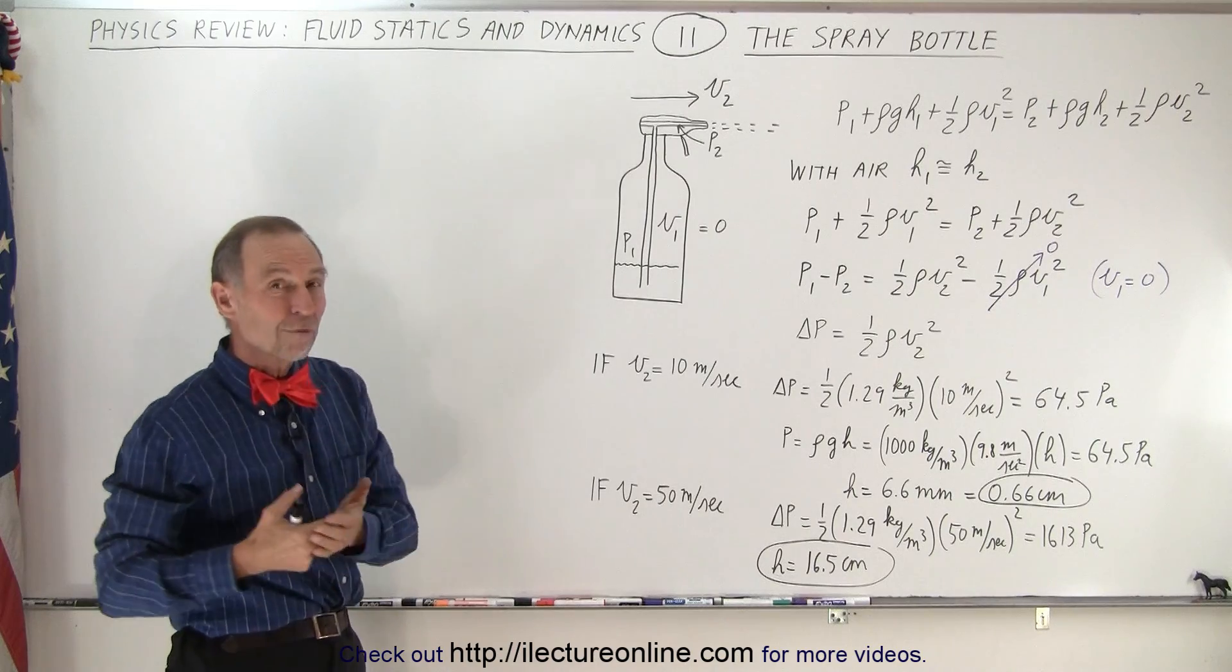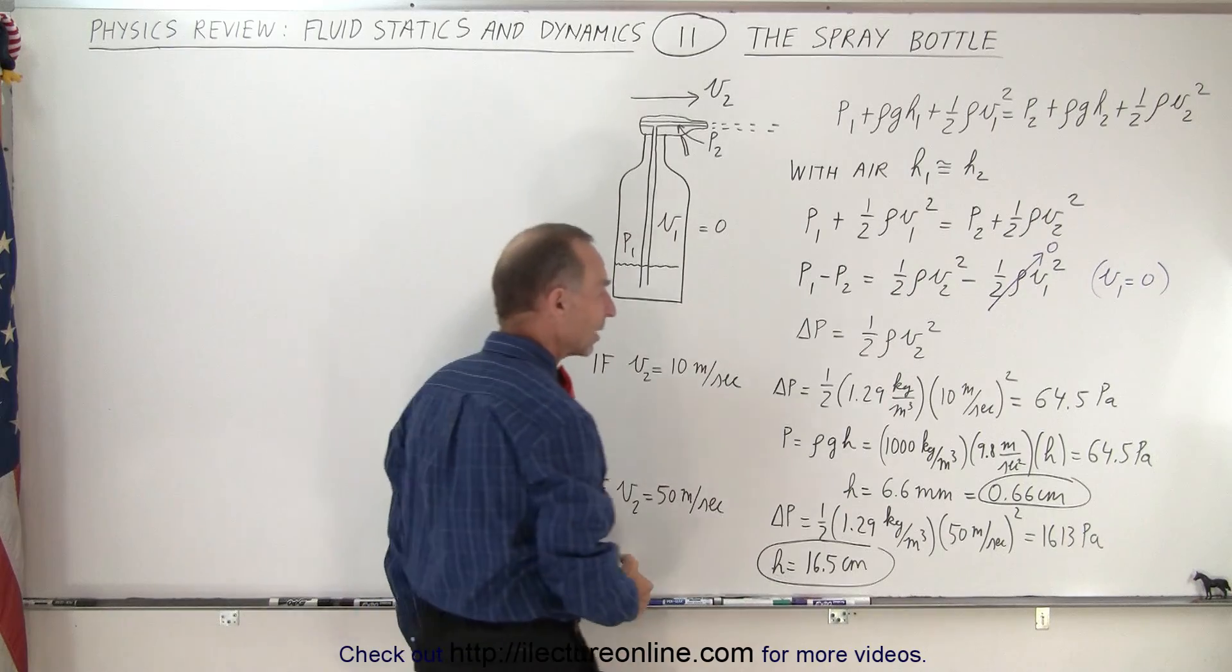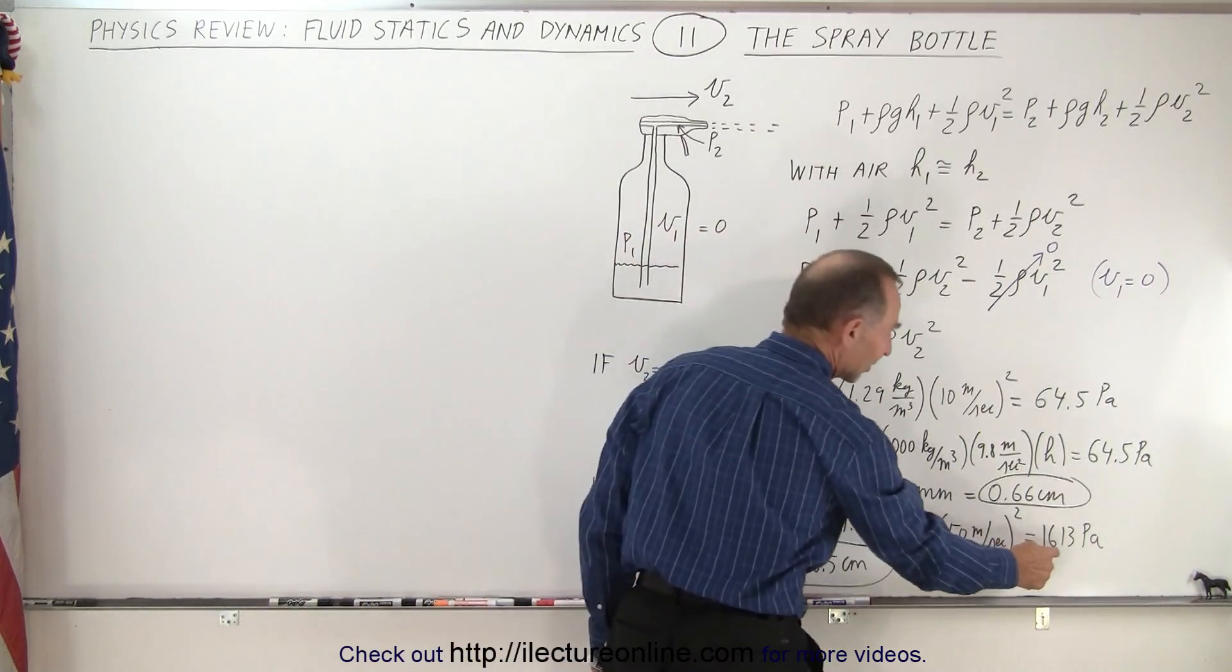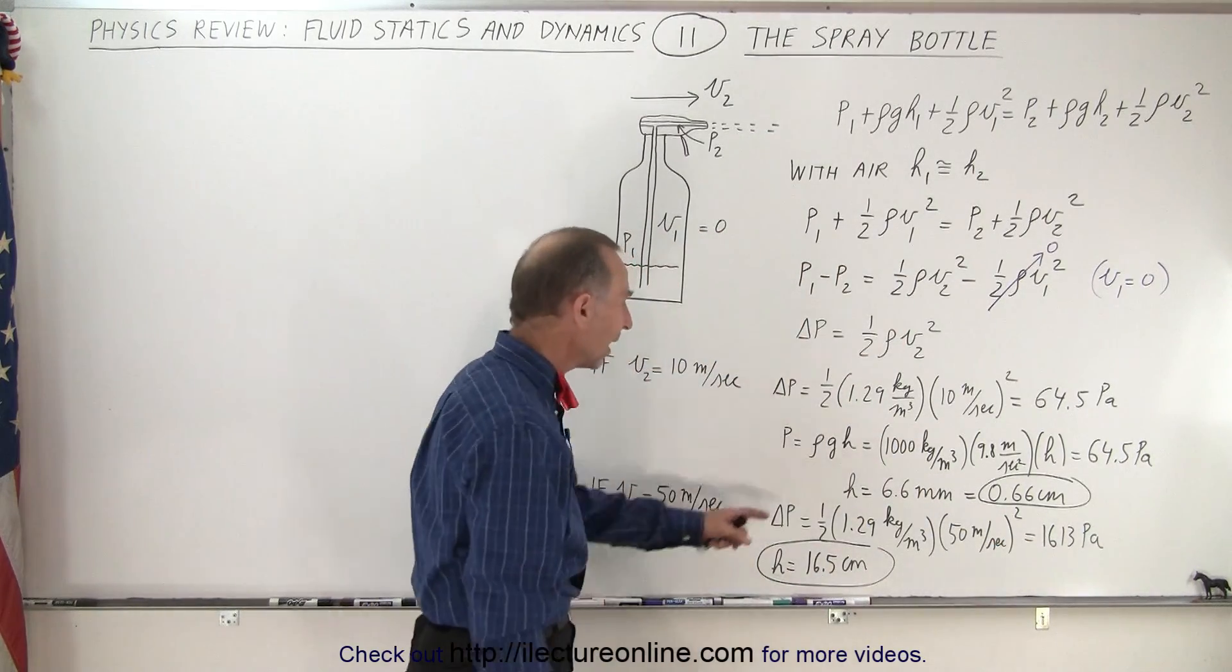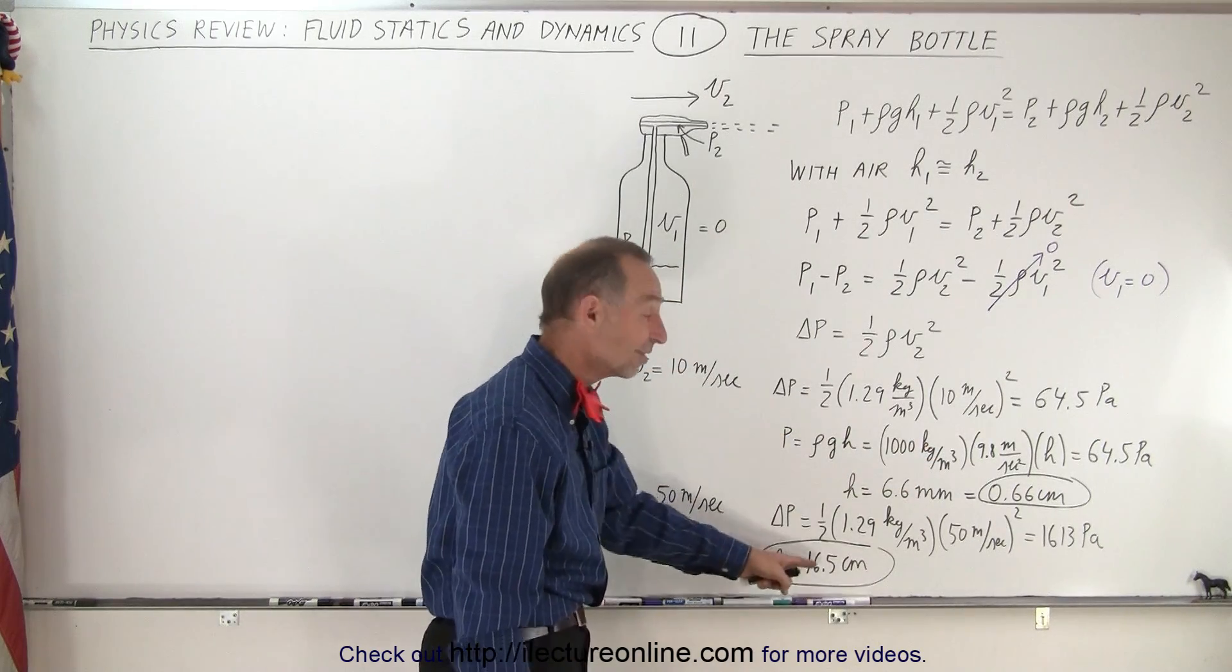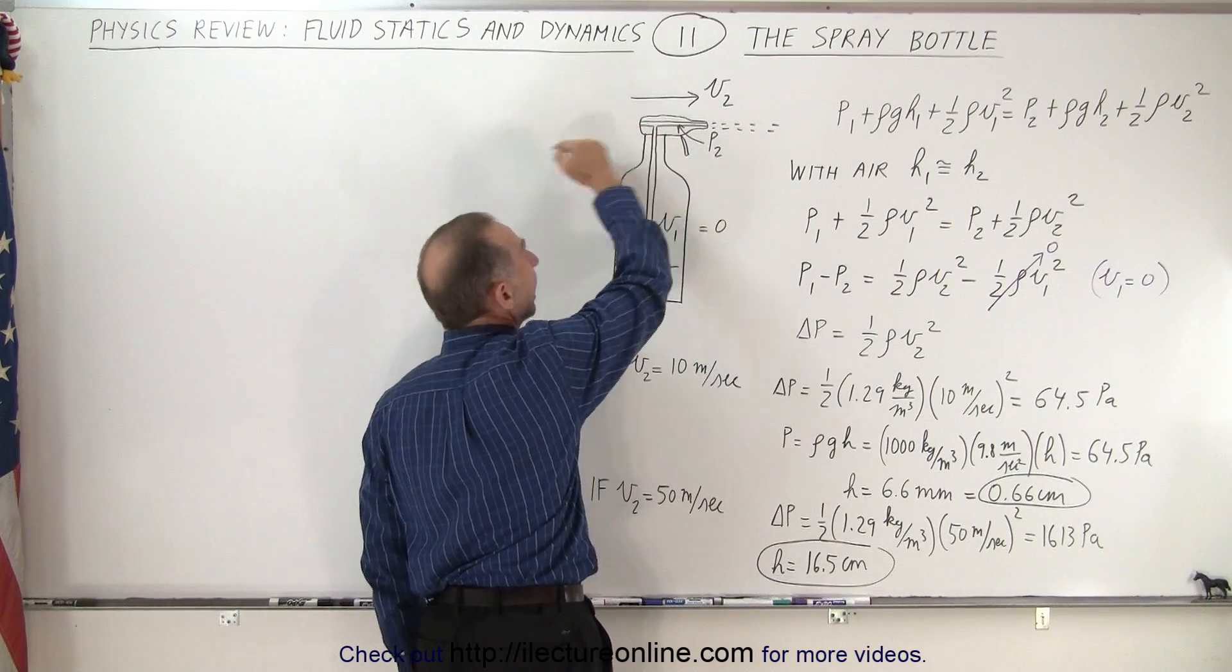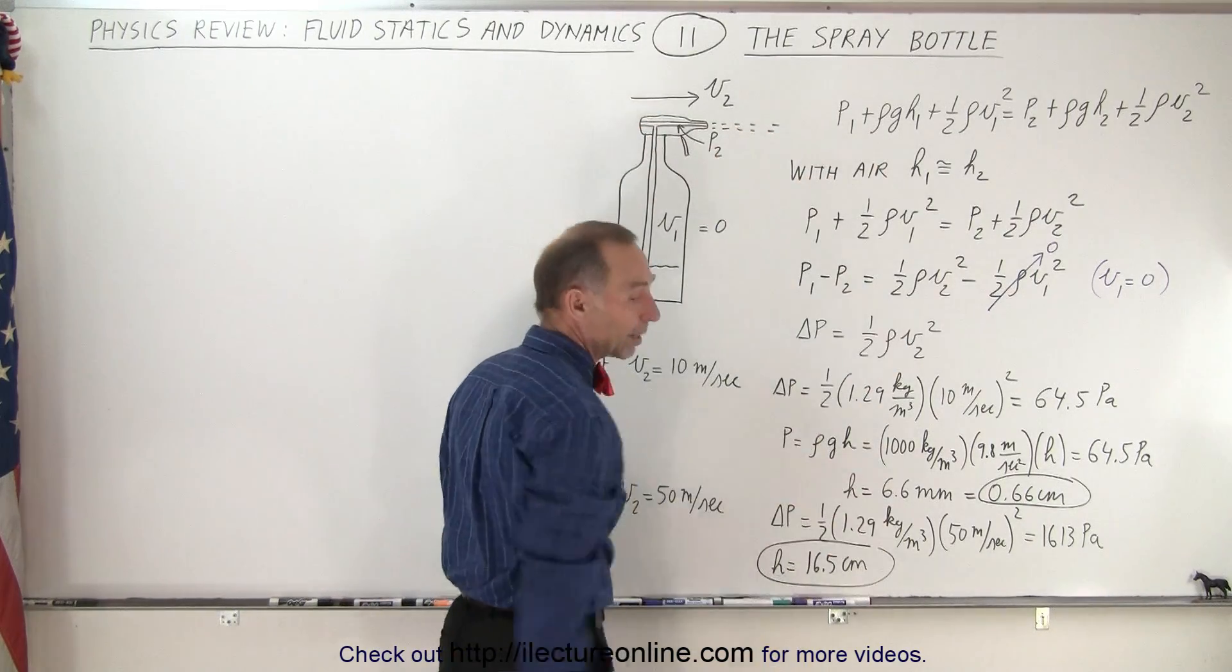So the air must flow faster than that. Let's say we get it up to 50 meters per second. Then you can see that the pressure difference will now be 1613 Pascals. And if we plug that into the same equation, we find that the height then will be 16.5 centimeters, which would then be enough to pull the liquid all the way up to here and then the liquid spray out of the bottle.